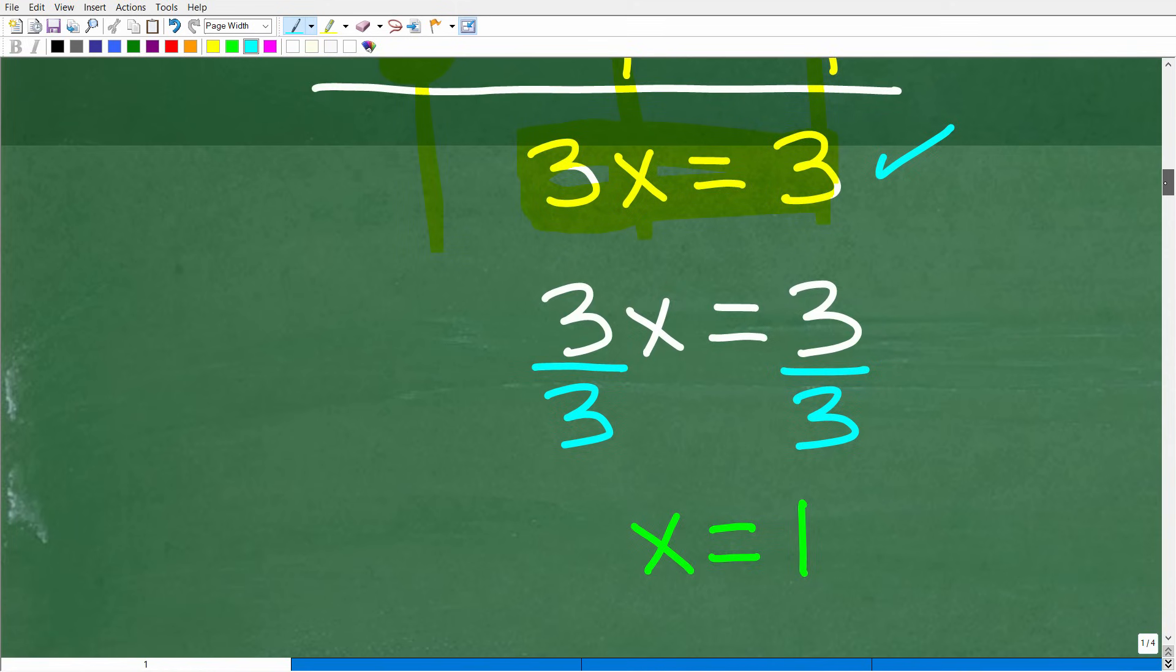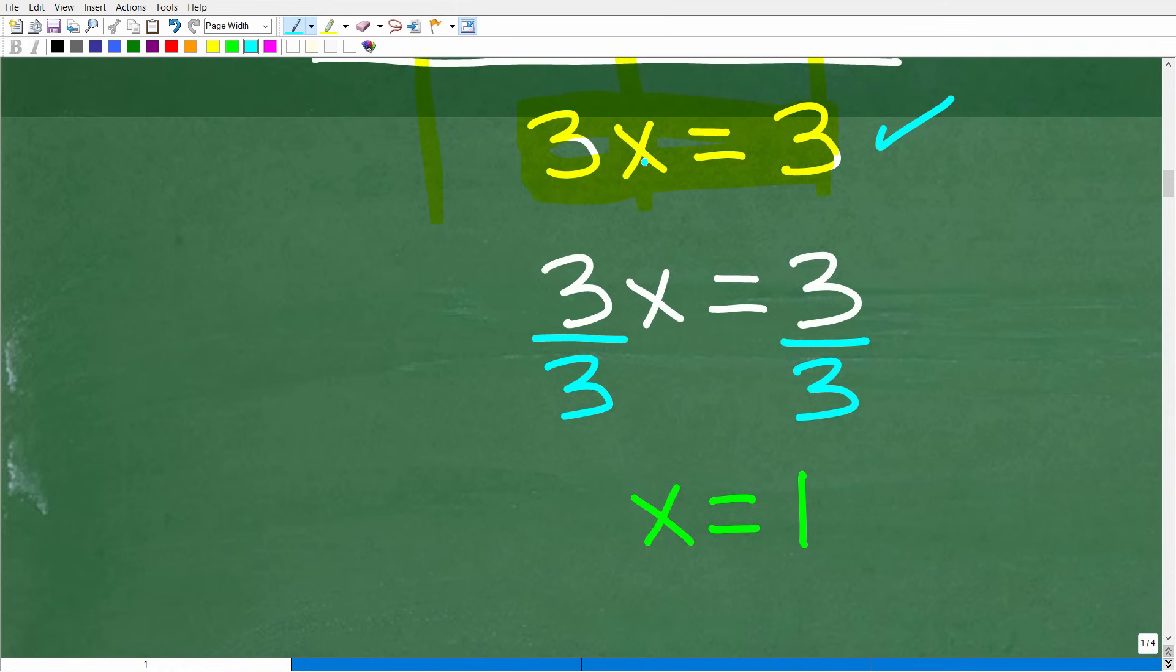So the next step to solve this equation, again, when we're solving an equation, what we want to do is get the x by itself, or 1x. So we have 3x. This means 3 times x. So how can I get x by itself? Easy. All I have to do is divide both sides of the equation. Again, remember, in algebra, whatever you do to one side of the equation, as long as you do it equally to the other side, you are a-okay.